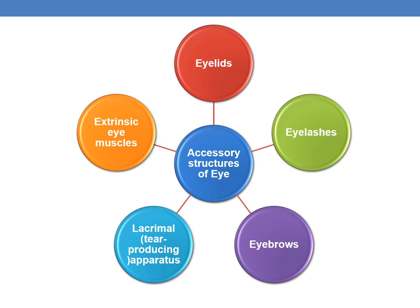Coming to the accessory structures of the eye: the accessory structures are eyelids, eyelashes, eyebrows, lacrimal apparatus, and finally extrinsic eye muscles.